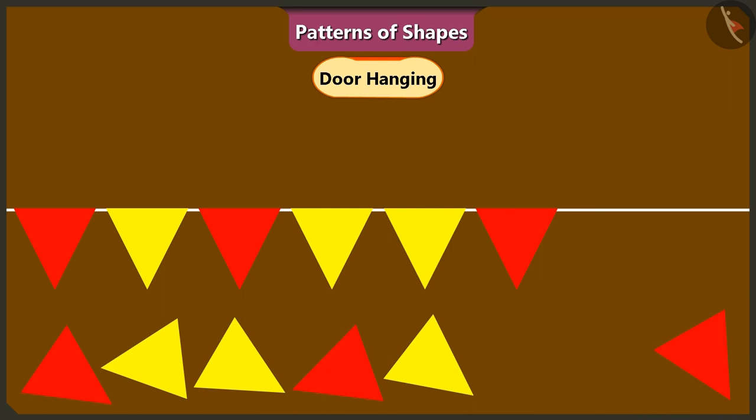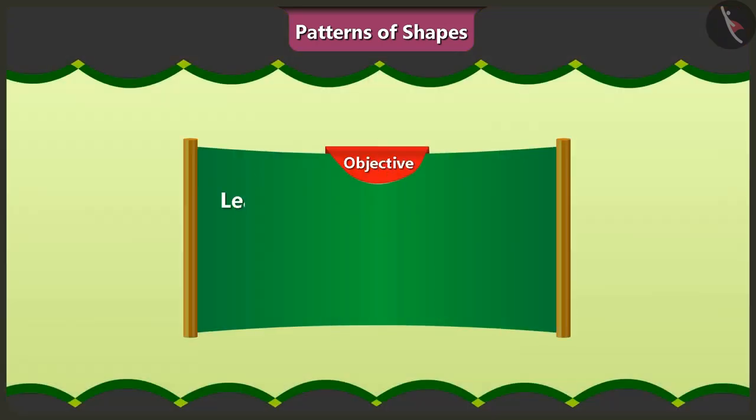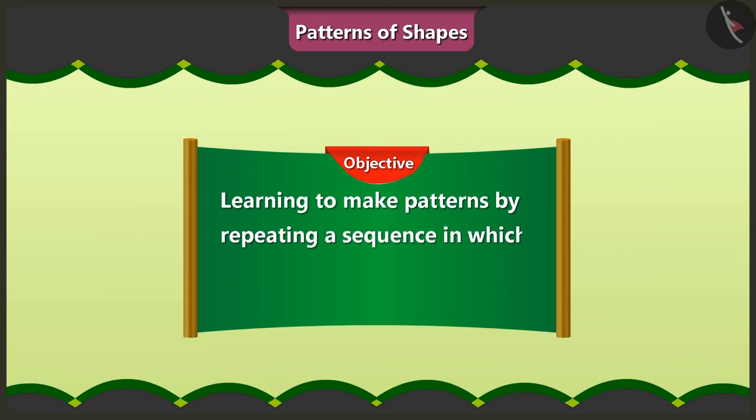It's looking really good. Oh, Vinny, Vinny. Look at this toran carefully. The triangle shapes have been put together in a special pattern. These are patterns of shapes. Patterns of shapes? Yes, friends. In today's video, we will learn how to make patterns by repeating a special sequence in which different shapes are organized.